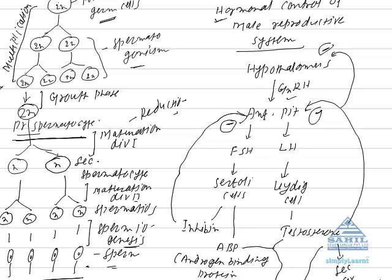The target cell of FSH is sertoli cell, which is found in testis. In response to FSH, sertoli cell releases inhibin and androgen binding protein.